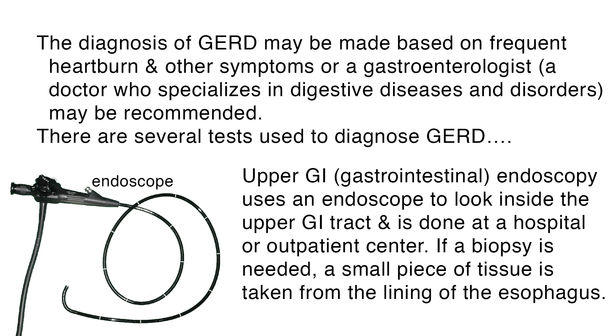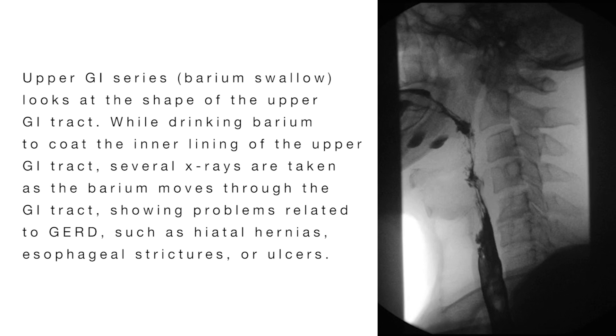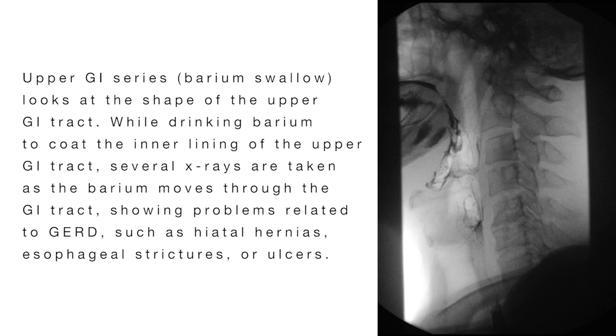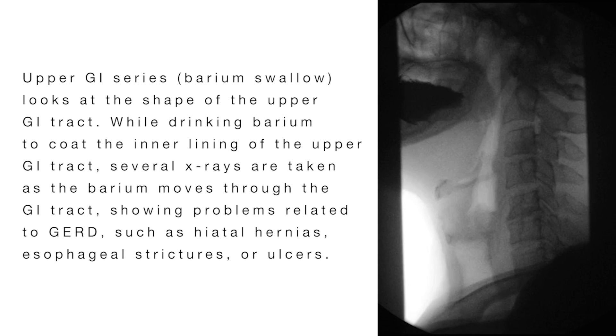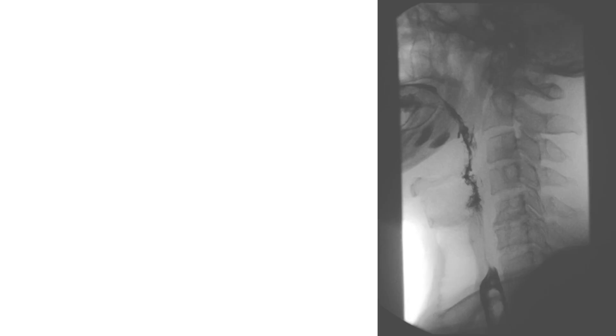The diagnosis of GERD may be made on frequent heartburn and other symptoms, or a gastroenterologist may be recommended. An upper GI or gastrointestinal endoscopy uses an endoscope to look inside the upper GI tract and is done at a hospital or outpatient center. If a biopsy is needed, a small piece of tissue is taken from the lining of the esophagus. Upper GI series or barium swallow looks at the shape of the upper GI tract. While drinking barium to coat the inner lining, several x-rays are taken showing problems related to GERD such as hiatal hernias, esophageal strictures, or ulcers.